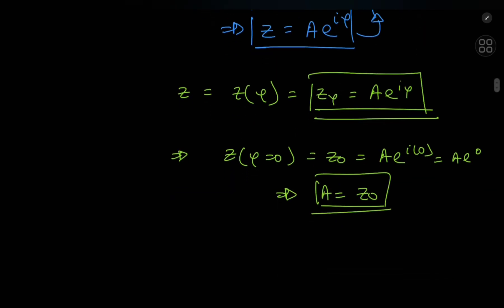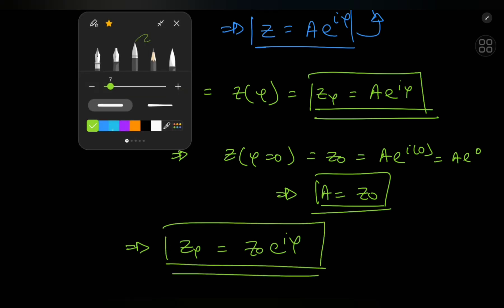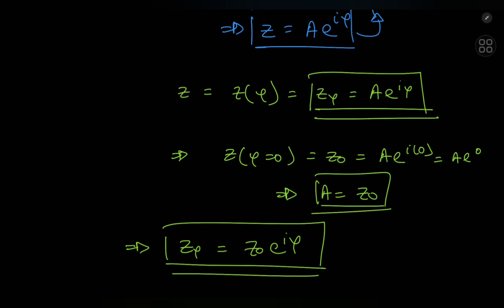So we conclude that z sub phi equals z nod times e to the i phi. What does this equation mean? It tells us that if we take some vector in the complex plane z nod and apply to it this operator e to the i phi, we get a vector that's actually z nod just rotated by phi radians. So this proves that e to the i phi is a rotation operator.